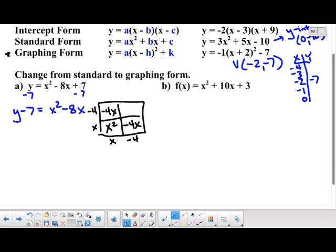Then finally to complete it, we need to figure out what number would go here. Negative 4 times negative 4 is 16. So we're going to add 16 to both sides. On the left side, 16 minus 7 would be 9, so we get y plus 9. On the right side, x squared minus 8x plus 16 can be written as x minus 4 squared.